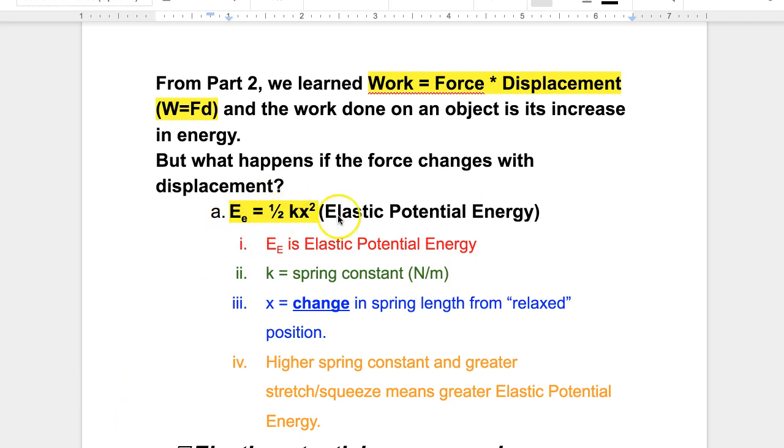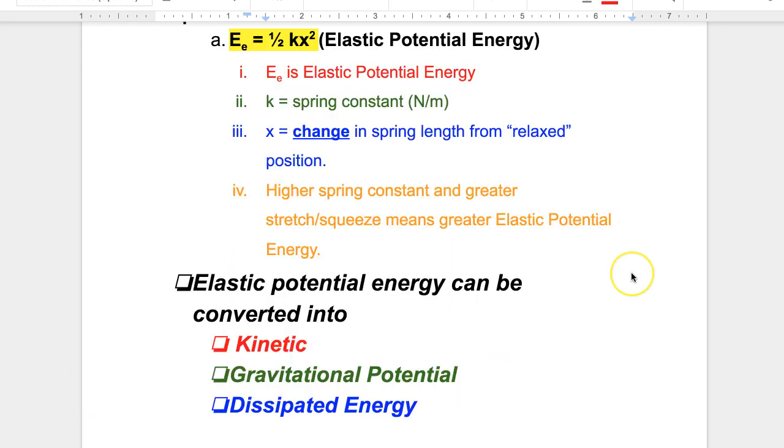Here is our formula for elastic energy. You can see it equals one half kx squared. We'll call it elastic potential energy. It's potential because it's stored until you release that spring. Just like gravitational potential energy, it's stored until you release an object and it drops. All different types of potential energy, kinetic energy, dissipated energy, that elastic potential energy can be converted into.